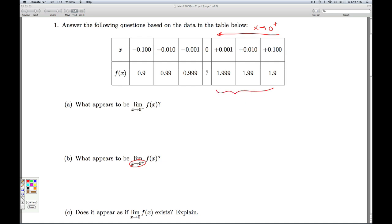What appears to be the pattern in the f(x)? Well, as x gets closer to 0 from the right, the f(x) values appear to get closer to 2. And so it appears that the limit as x approaches 0 from the right of f(x) is 2.